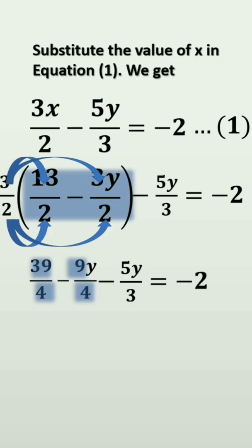Then, we have to take the value of minus 5y by 3 is equal to minus 2. Then, collection of like terms. Minus 9y by 4 minus 5y by 3. Here, LCM is 12.